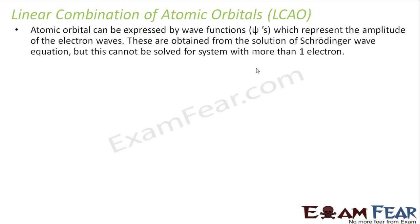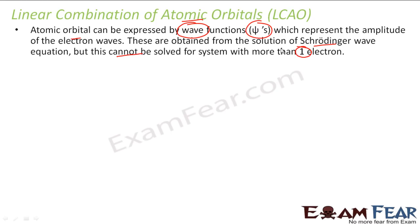Let's understand the linear combination of atomic orbitals. As we know, an atomic orbital is nothing but a wave function, psi. This is nothing but a Schrödinger wave equation. But this cannot be solved for a system with more than one electron.